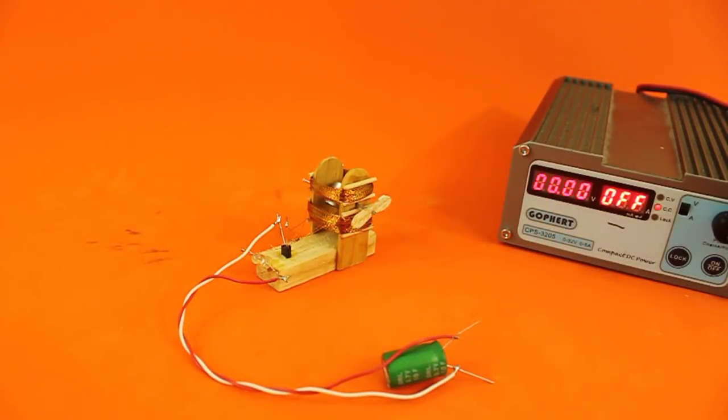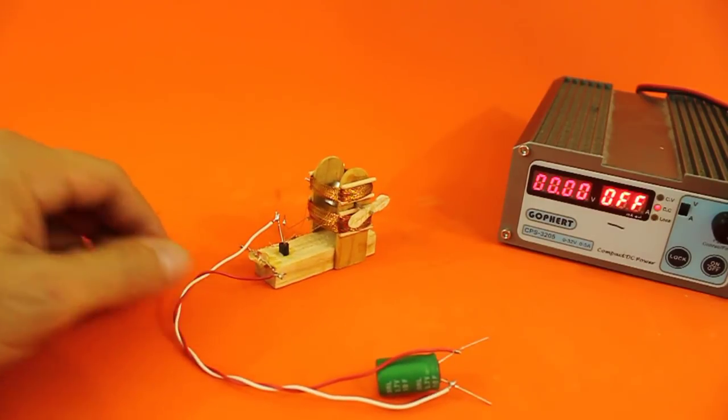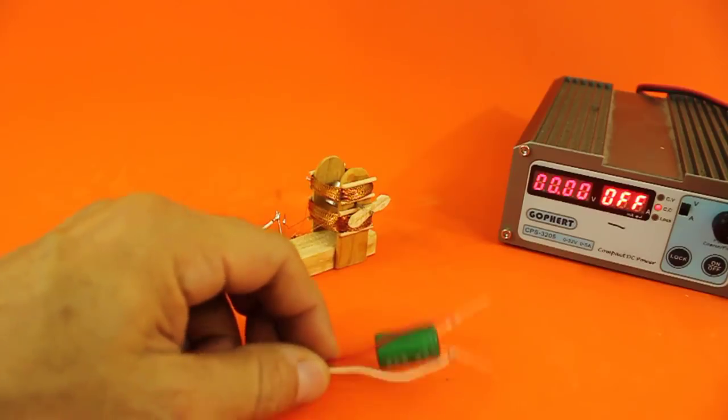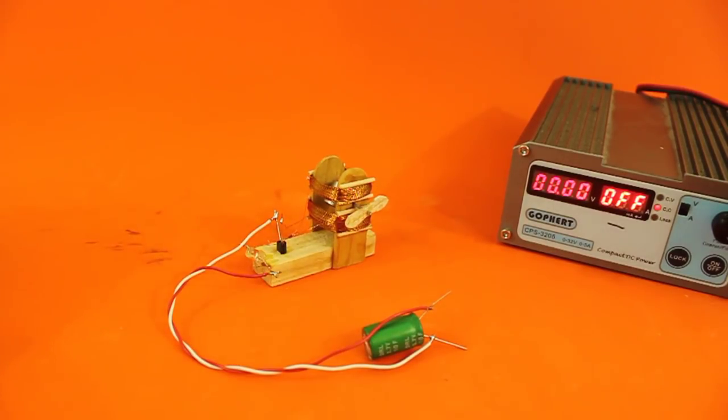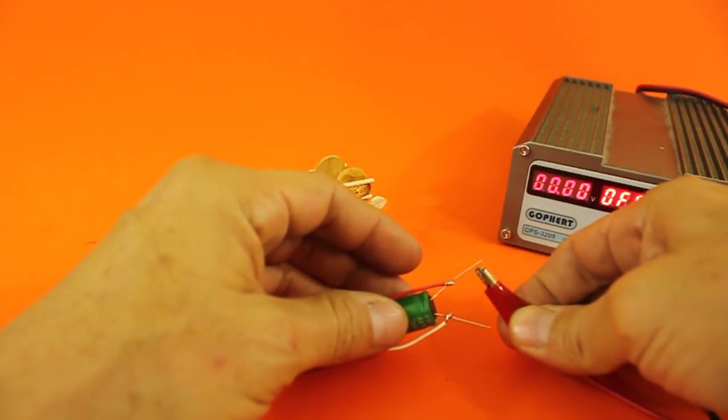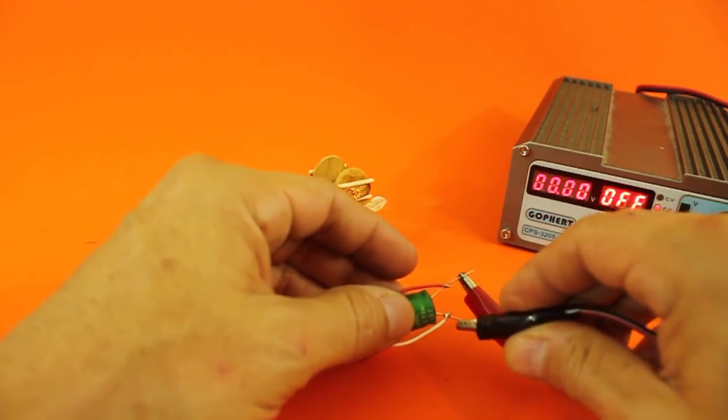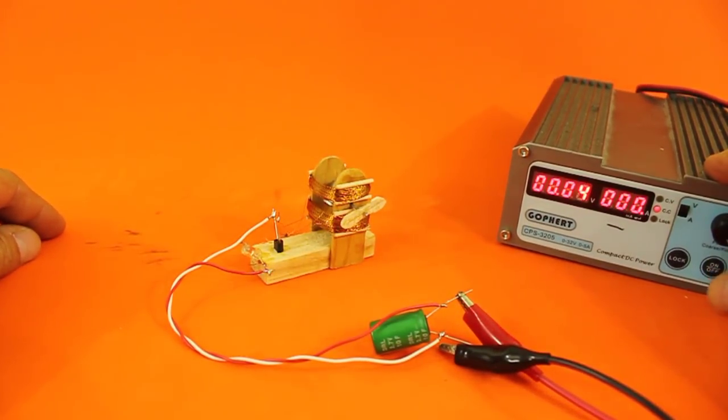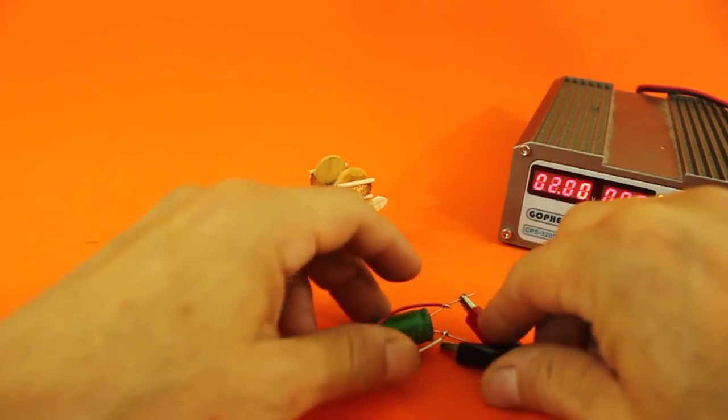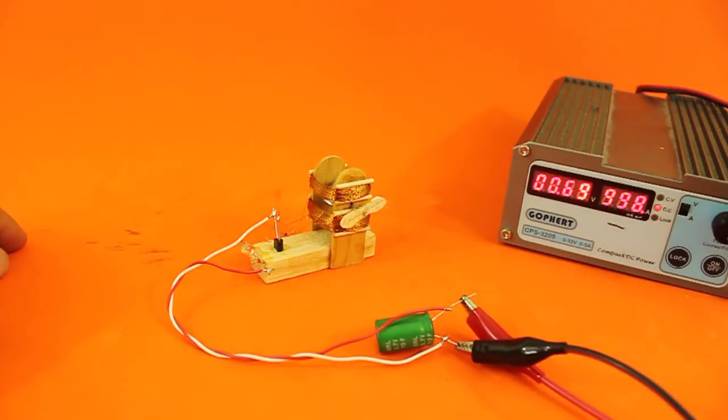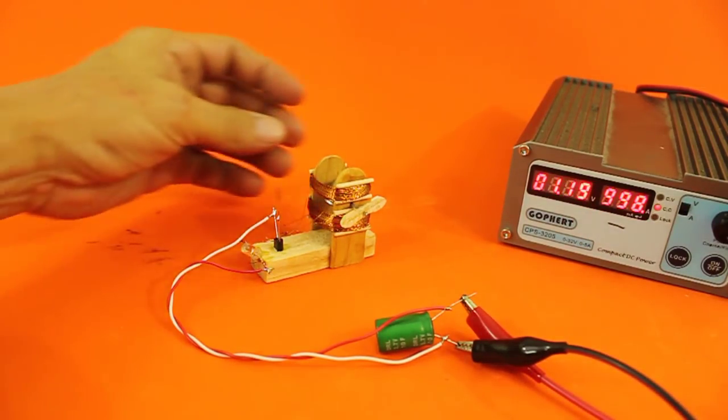This motor draws very little current, only 10mA at a voltage of 1V. So we can run it from a supercapacitor, this is a 10F supercapacitor. So I'm going to connect it to the power supply to charge the supercapacitor first at a voltage of 2V. The supercap is charging. We can now start the motor.